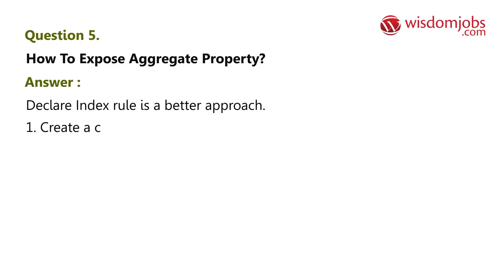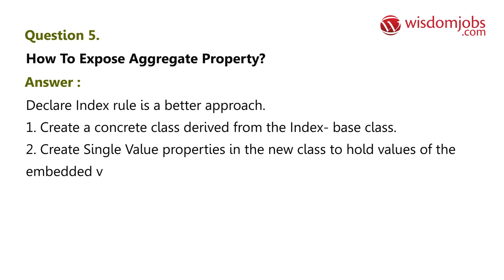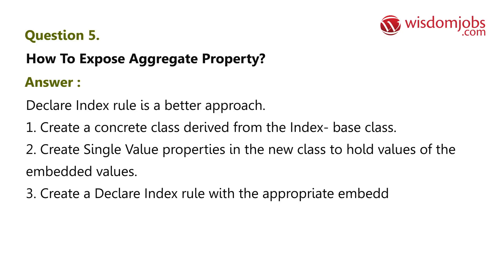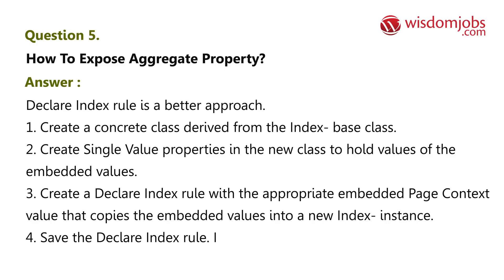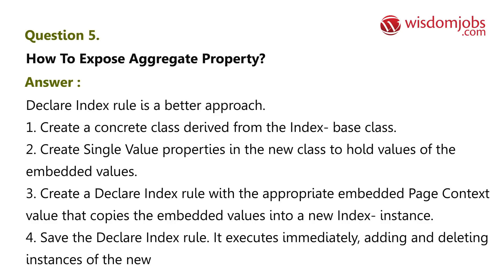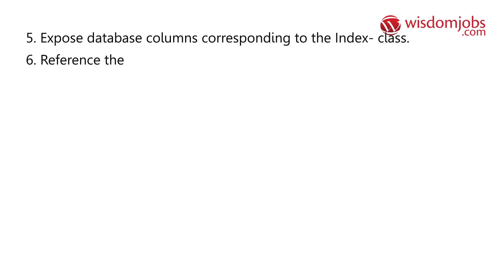Steps to expose an aggregate property: (1) Create a concrete class derived from the index base class to create single-value properties in the new class to hold values of the embedded values. (3) Create a declare index rule with the appropriate embedded page context value that copies the embedded values into a new index instance. (4) Save the declare index rule — it executes immediately, adding and deleting instances of the new class. (5) Expose database columns corresponding to the index class.